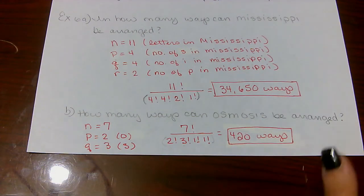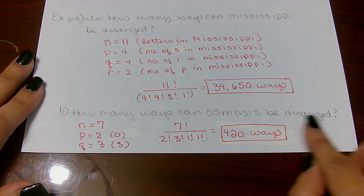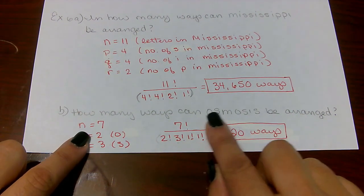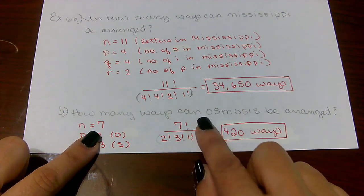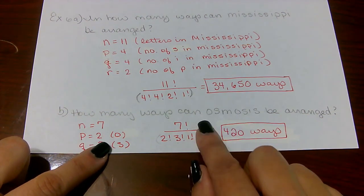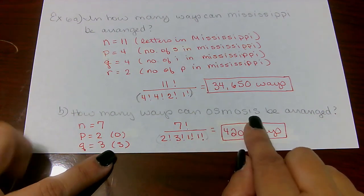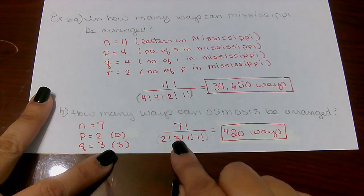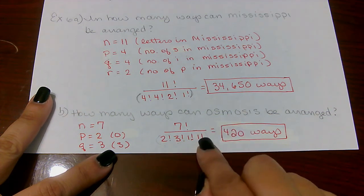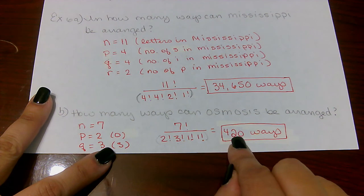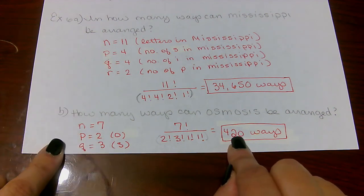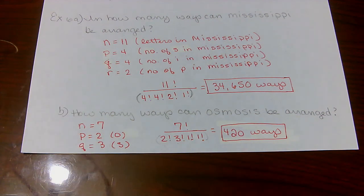For part B, how many ways can the letters of Moses be arranged? There are seven letters total. There are two O's, three S's, one M, and one E. Using the formula: 7! / (2! × 3! × 1! × 1!) = 420 ways. That concludes Section 11.2. Please let me know if you have any questions.